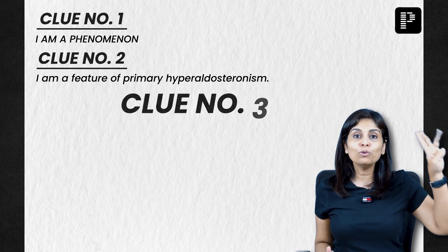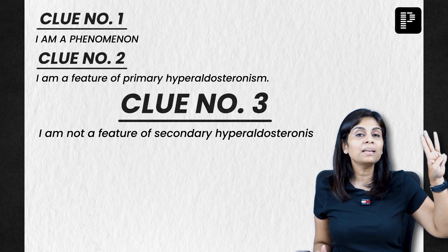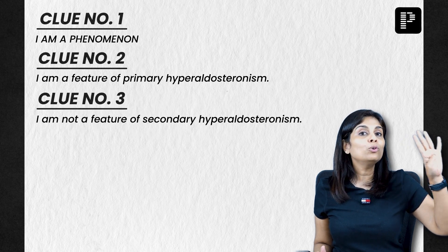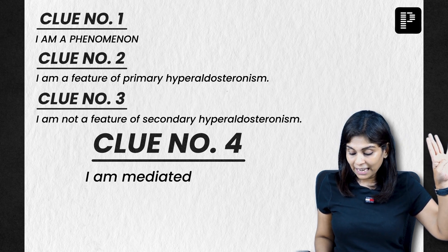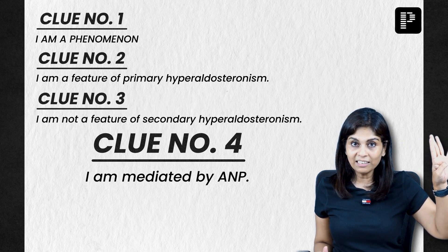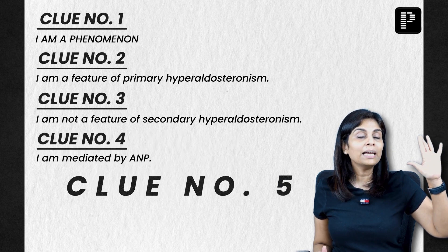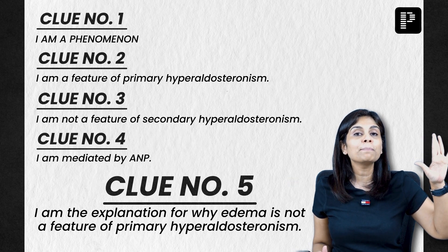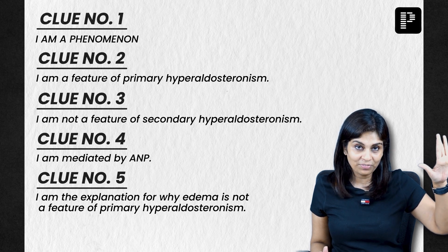Clue number three: I am not a feature of secondary hyperaldosteronism. Clue number four: I am mediated by atrial natriuretic peptide.